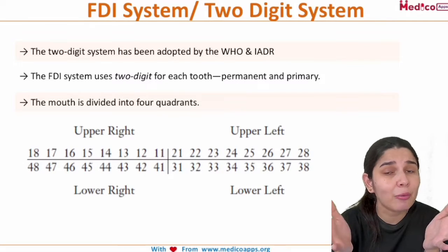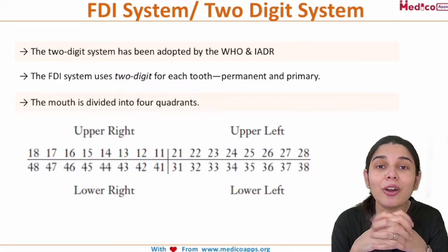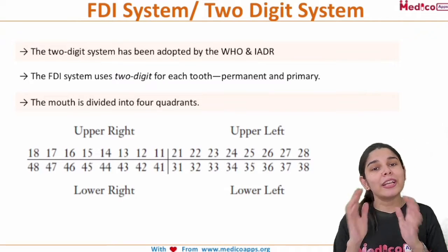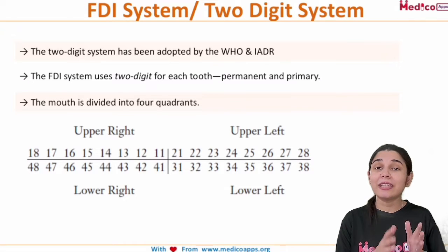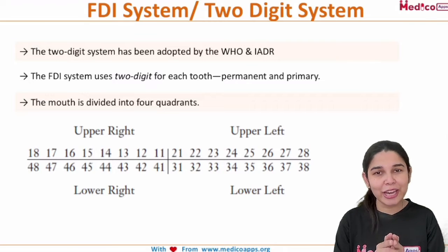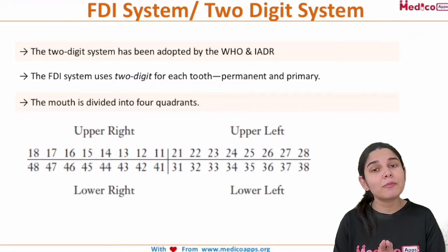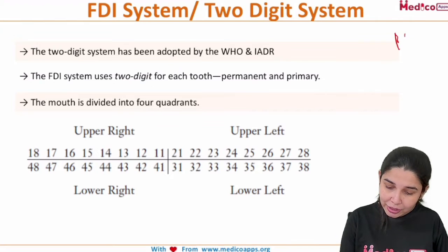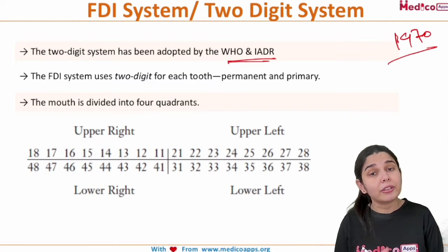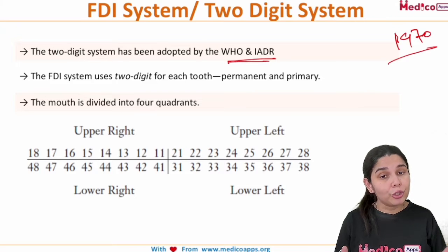A second significant advantage of the FDI system — and this is one of the most important questions asked in your viva as well as in theoretical examinations — is that this two-digit system was given in the year 1970 and has been adopted by both the WHO and IADR, the International Association of Dental Research, making it a universally accepted tooth numbering system.